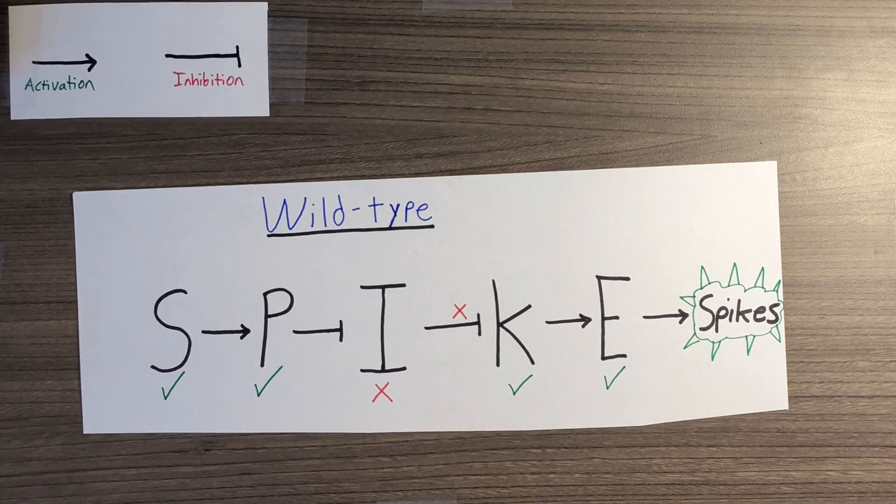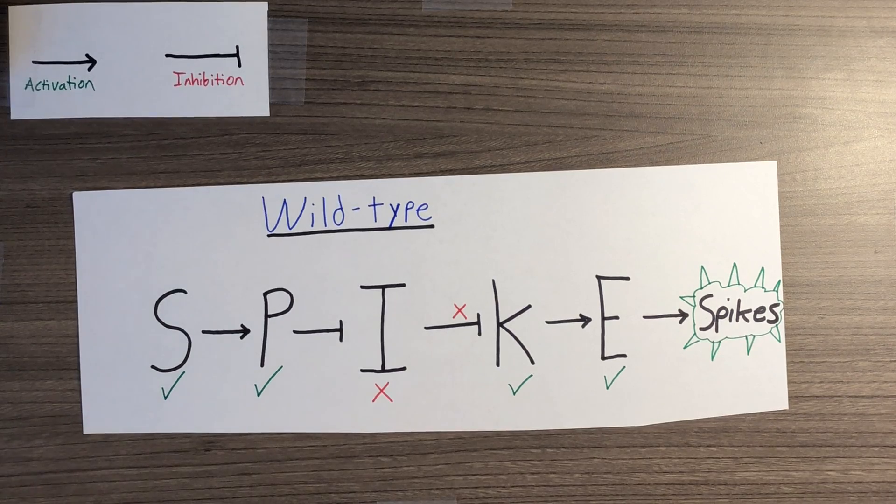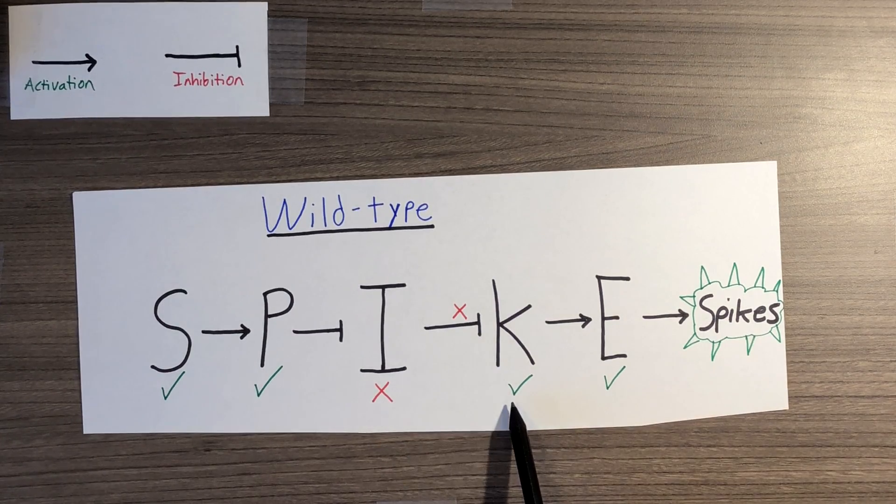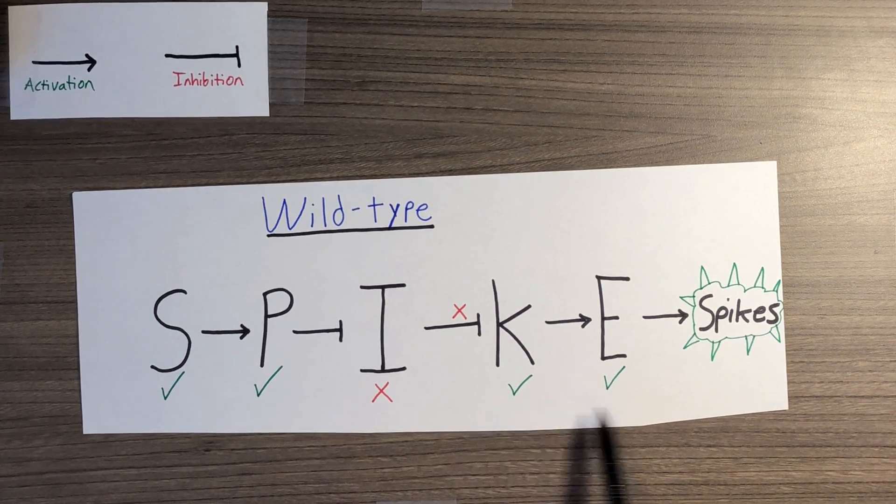In this case, spikes are produced since the I gene that inhibits the K and E genes is inhibited by the P gene, allowing E to be stimulated, producing spikes.